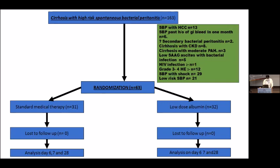In total, we randomized around 163 patients, of which 29 patients with SBP and shock were excluded. Low-risk SBP was seen in only about 21 patients. A total of 63 patients were excluded, and the remaining patients were randomized into the standard medical therapy arm and the low dose albumin therapy arm.